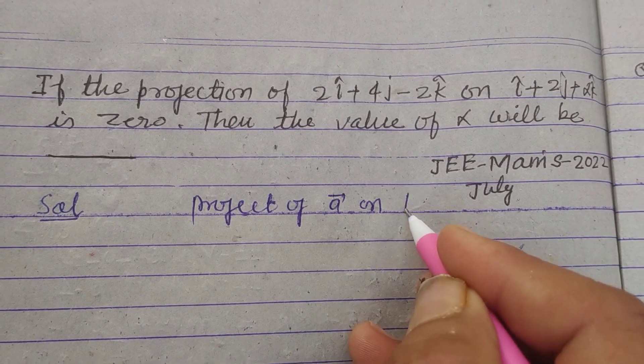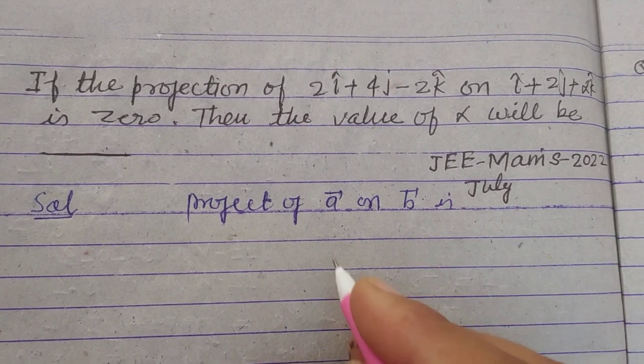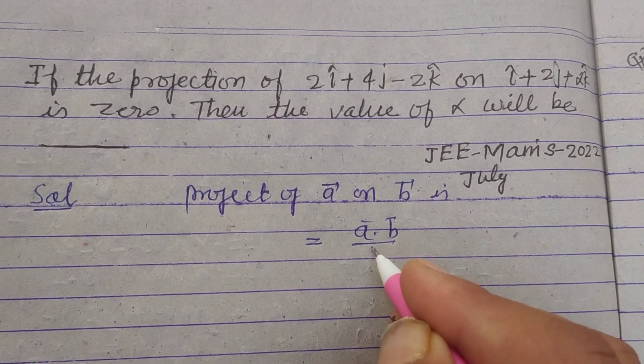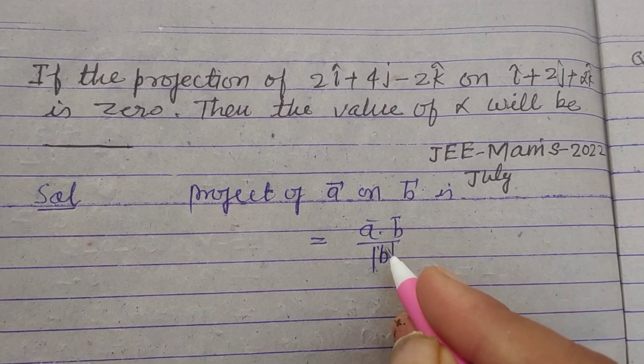So student, projection of vector a on vector b you know is a dot b upon modulus of b.